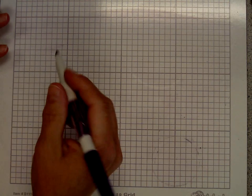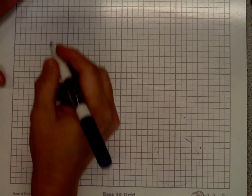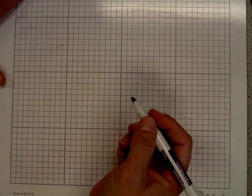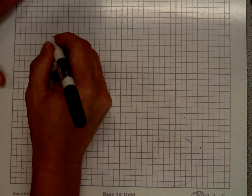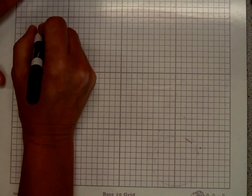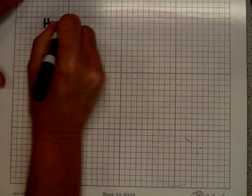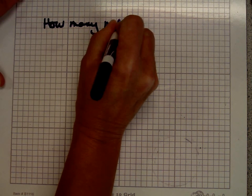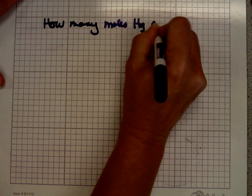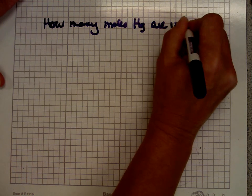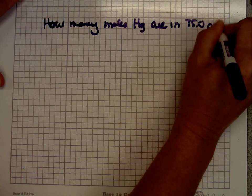Welcome to Markerboard Videos. Today we're going to do mole calculations. This is part one of the mole calculations video. It's chemistry. The question is how many moles of mercury are in 75.0 grams of mercury?